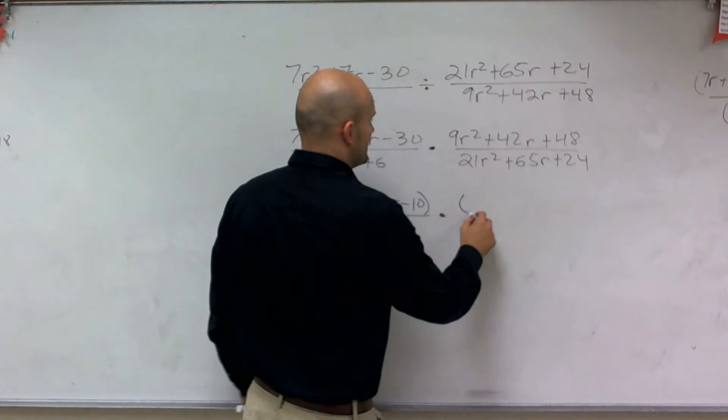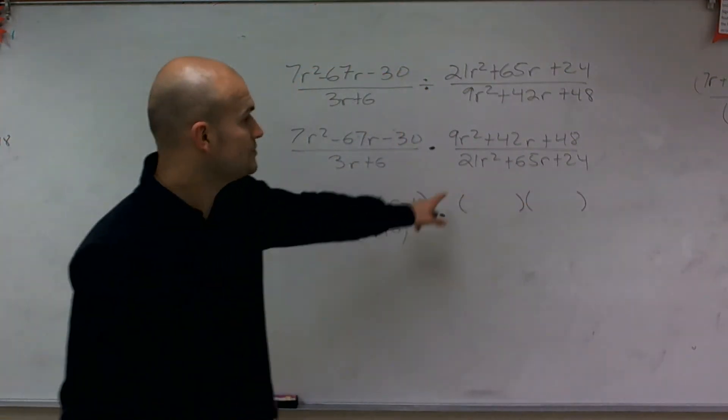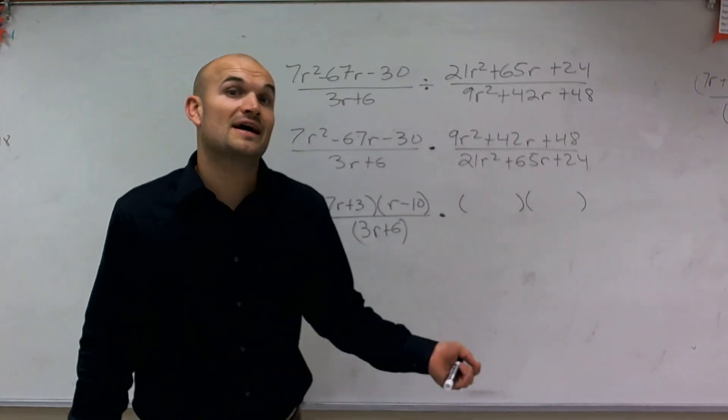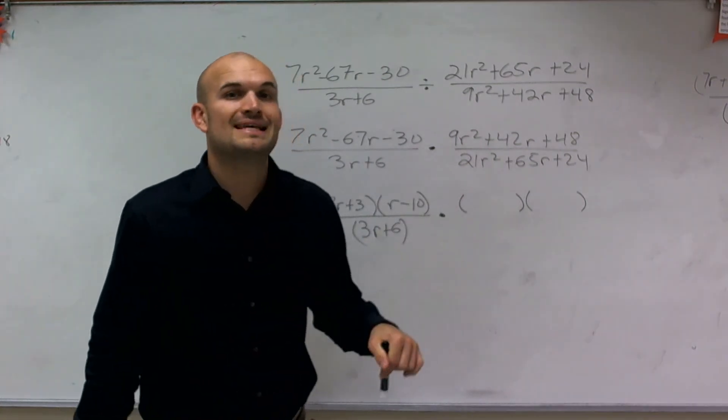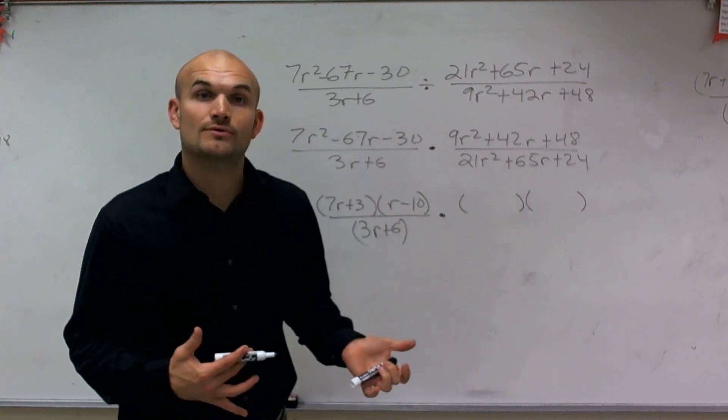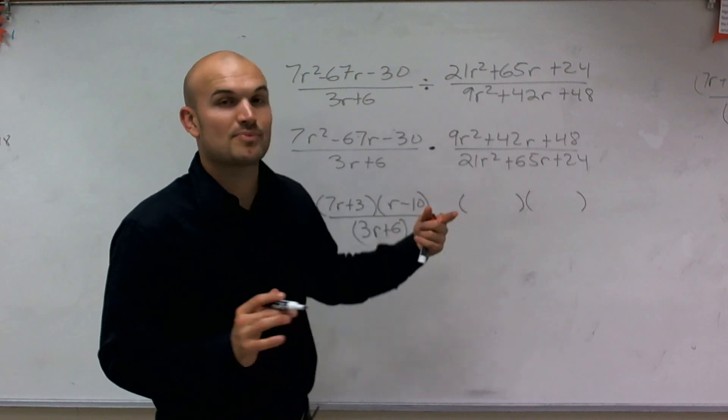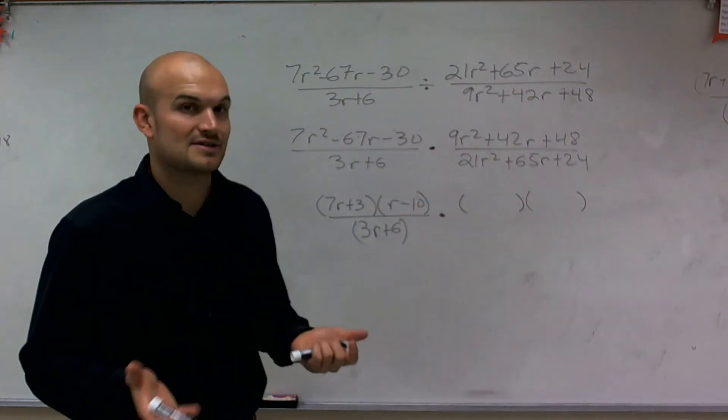So again, I rewrite it and see can I factor this out into two binomials. Now, you do notice I can factor this out by a divisor of 3, and that would probably be the easiest way I'd do first. However, what I just noticed when working through this problem is it's okay if you don't factor it out.